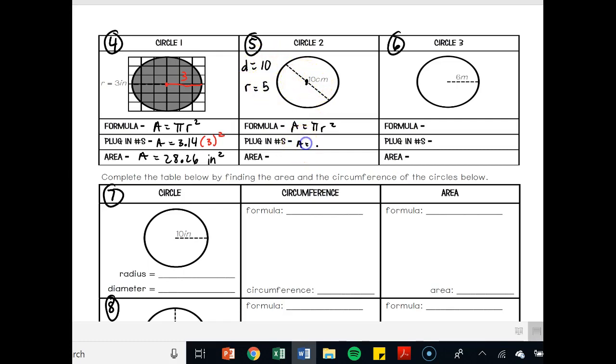So area is equal to 3.14 times 5 squared. 5 squared is going to be really 5 times 5. So 3.14 times 25. So area is equal to 78.5 centimeters squared.